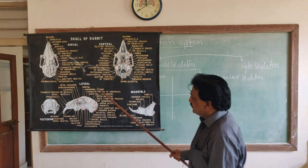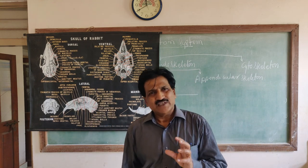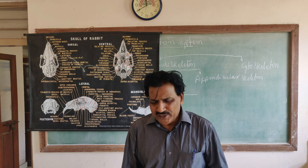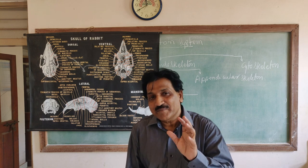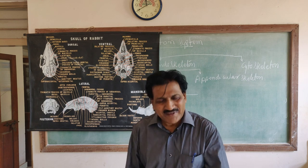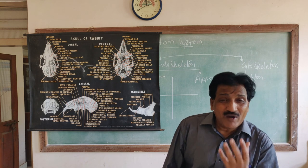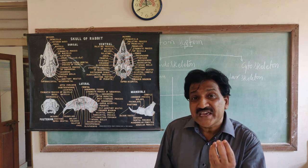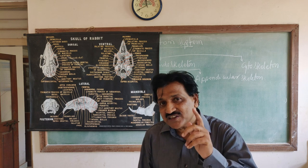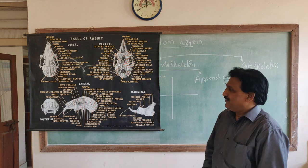The cranial part encloses the brain — it is also called the brain box. The covering of the brain is called the meninges. This is the covering part of the brain.